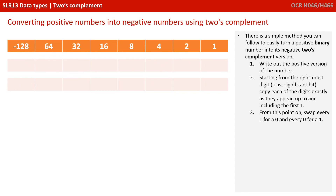There is actually a really neat trick you can use that always works, which turns a 2's complement number into its negative version. The process is as follows: start by writing out the positive version of the number. Then, starting from the most right-hand digit — the least significant bit — copy out each digit exactly as it appears, up to and including the first 1 you come across. After this point, you swap every 1 for a 0, and every 0 for a 1.